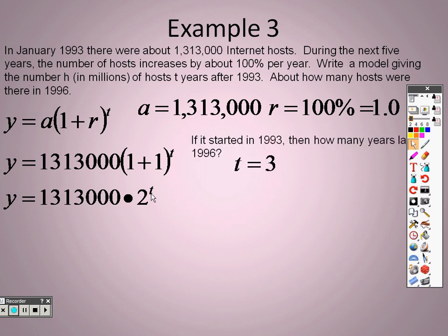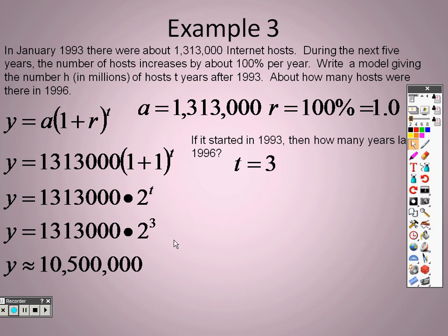Well, between 93 and 96 there's three years, which means t is 3. So I plug in a 3 for t. 2 to the third is 8, and 8 times 1,313,000 is approximately 10,500,000.